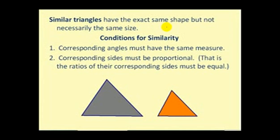Similar triangles have the exact same shape, but not necessarily the same size. The conditions for similarity are: number one, corresponding angles must have the same measure — so each pair of corresponding angles is congruent — and number two, corresponding sides are proportional, meaning the ratios of the corresponding sides are equal.